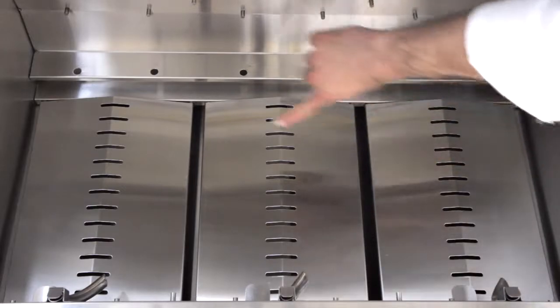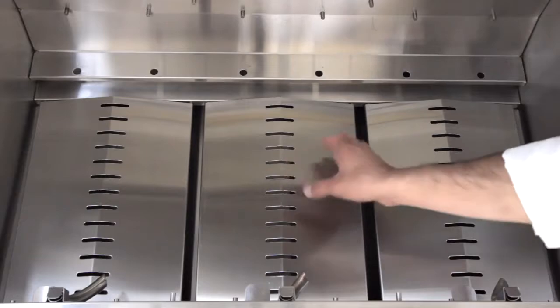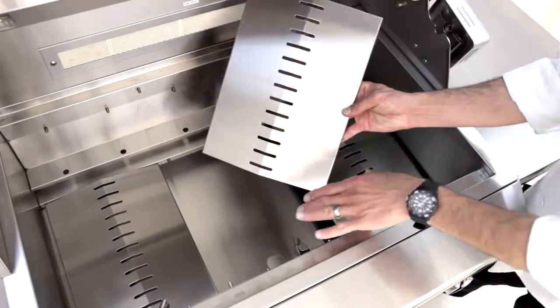Below the burners, the drip pan baffles radiate heat back up towards your food, and for easy cleaning they can be removed without the use of any tools.